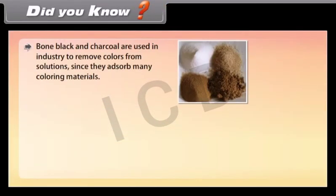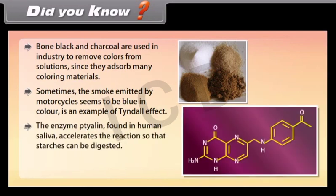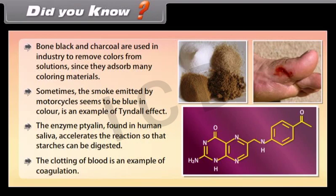Bone black and charcoal are used in industry to remove colors from solutions since they absorb many coloring materials. Sometimes the smoke emitted by motorcycles seems to be blue in color, which is an example of the Tyndall effect. The enzyme ptyalin found in human saliva accelerates the reaction so that starches can be digested. The clotting of blood is an example of coagulation.